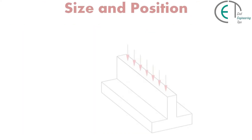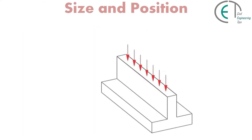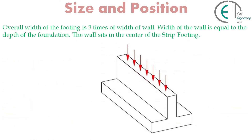Now let's talk about the size and position of strip footing. The overall width of the footing is three times the width of the wall. The width of the wall is equal to the depth of the foundation. The wall sits in the center of the strip footing.